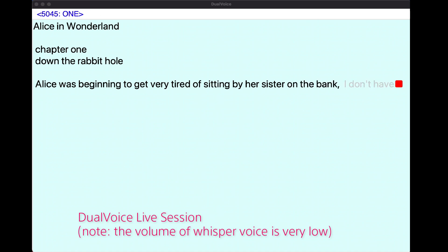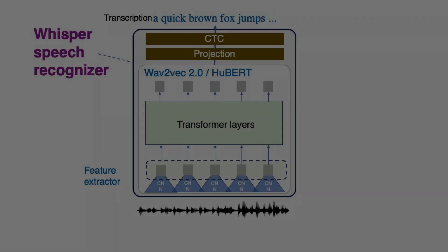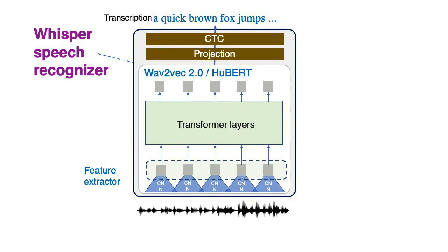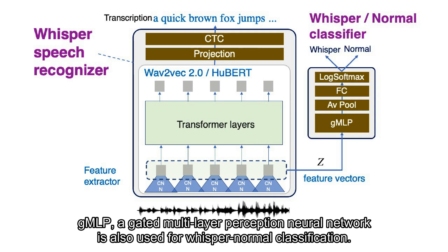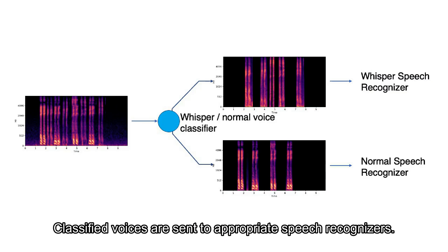To do transformer-based voice recognition, the neural network namely Wave2Vec 2 is used for whisper recognition. gMLP, or a gated multi-layer perceptron neural network, is also used for whisper/normal classification. Classified voices are then sent to appropriate speech recognizers.